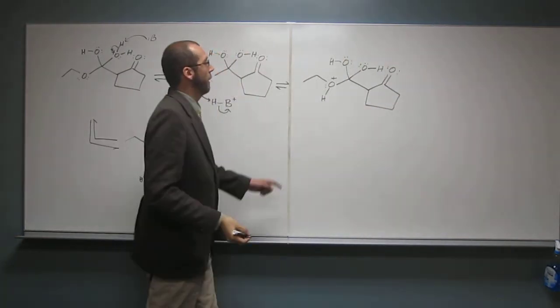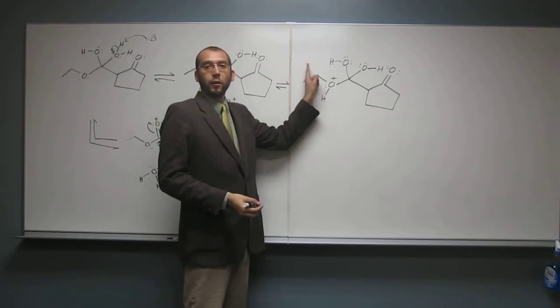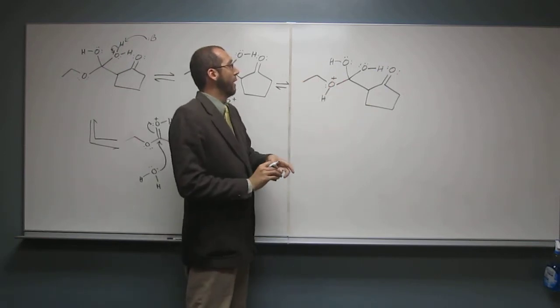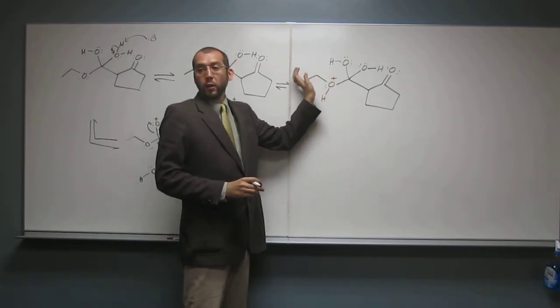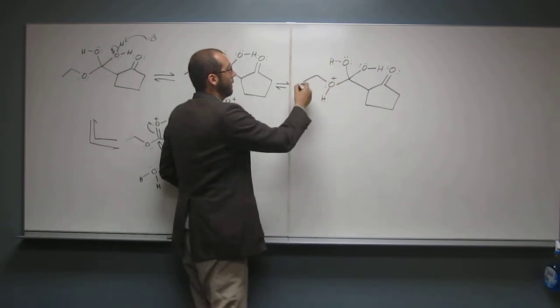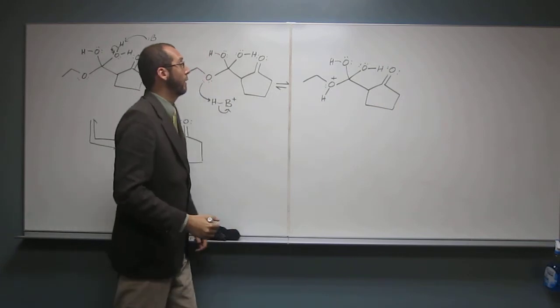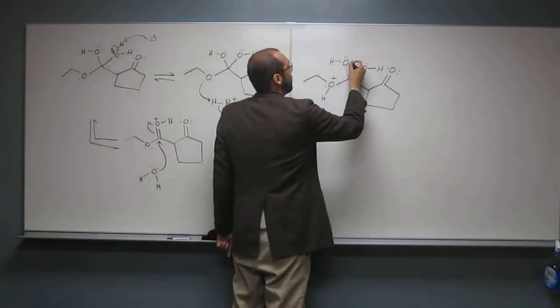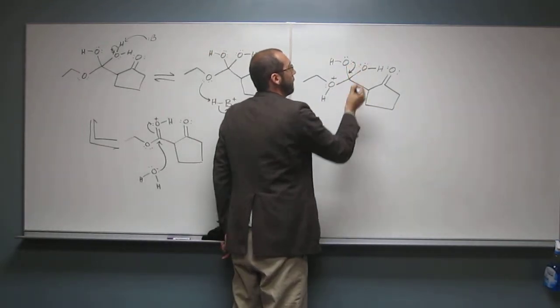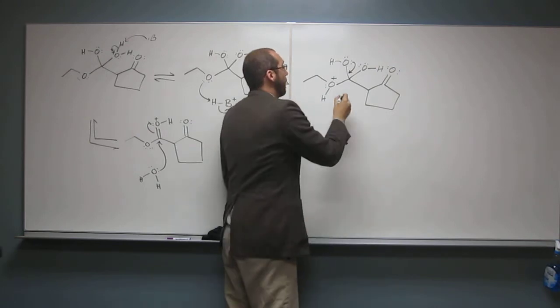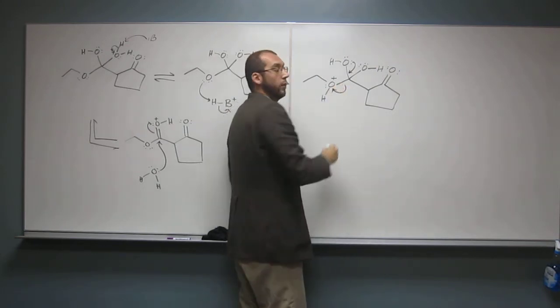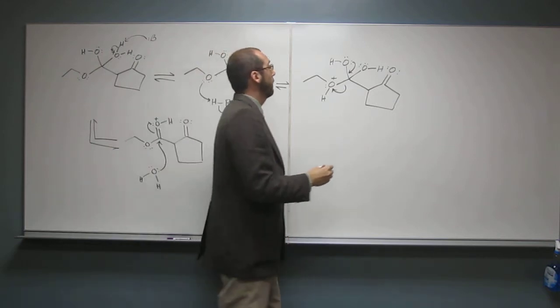That's going to protonate the alkoxy functionality, giving us the H there plus charge. Remember, whenever you can see a small molecule that has a positive charge on it, it'll be a good leaving group. Hopefully you can see that's ethanol right there. That's going to be a really good leaving group. So what's going to happen is these electrons are going to come down and knock that good leaving group out, reforming the carbonyl there.